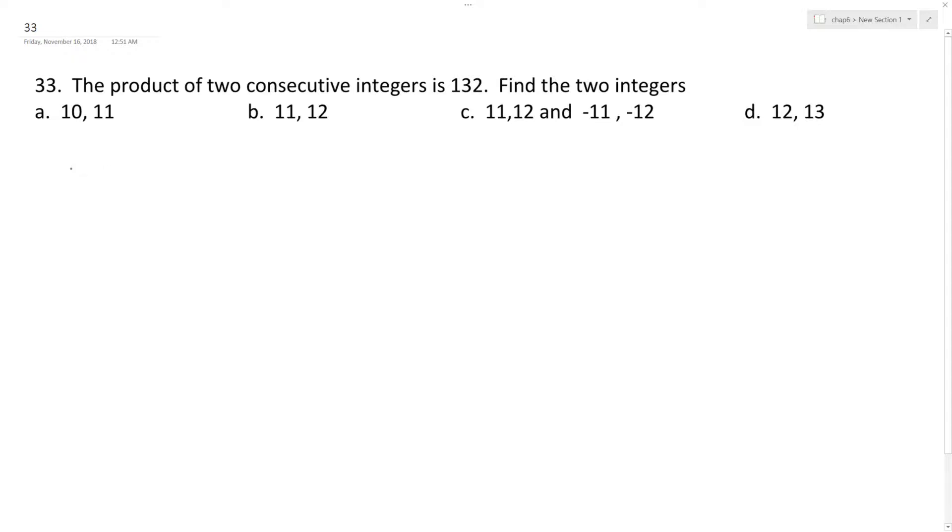We'll label those two consecutive integers, which means one is going to be one more than the other. So x times x plus one, because one more than whatever x is, equals 132.